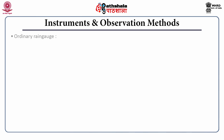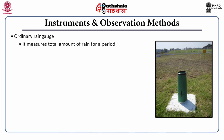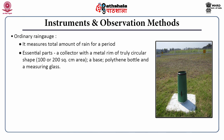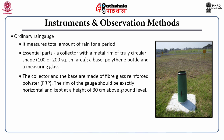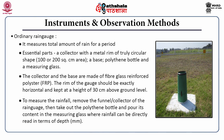The next equipment is the ordinary rain gauge, which measures the total amount of rain for a given time period. The essential part is a collector with a metal rim of truly circular shape, generally 100 to 200 square centimeters in size. There is also a base, a polythene bottle, and a measuring glass. The collector and base are made of FRP, that is fibre glass reinforced polyester. The rim of the gauge should be exactly horizontal and kept at a height of 30 centimeters above the ground. To measure rainfall, remove the funnel, pour the liquid into the measuring glass, and directly read the depth of rainfall from the graduated scale.